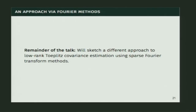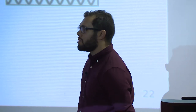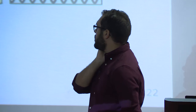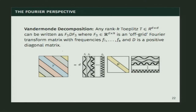The remainder of this talk sketches a different approach: estimating low-rank Toeplitz matrices using sparse Fourier transforms and leverage score sampling. These techniques use the Vandermonde decomposition — any rank-k Toeplitz matrix can be written as T = F * D * F^T, where F is a d-by-k matrix whose columns are k frequencies (not necessarily on-grid), and D is a diagonal matrix with weights. This is different from circulant matrices, where the frequencies would be on-grid.